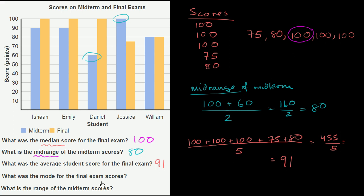What was the mode for the final exam scores? The mode is the most common score. We've listed all of them, and the most common score is 100. It appears three times, while 75 and 80 each appear only once. So the mode is 100.